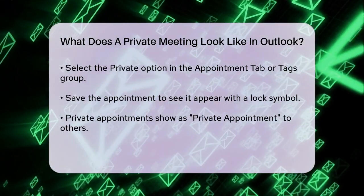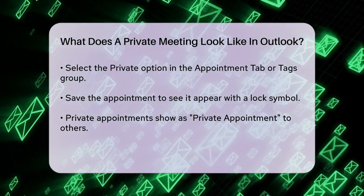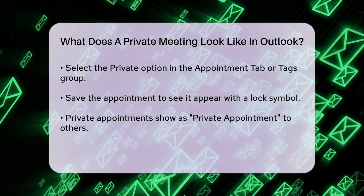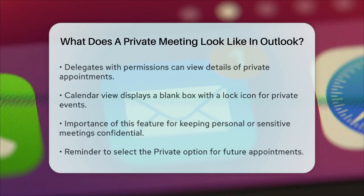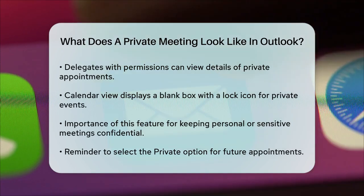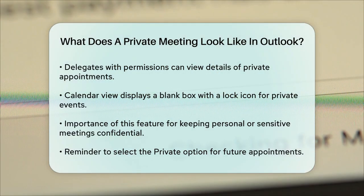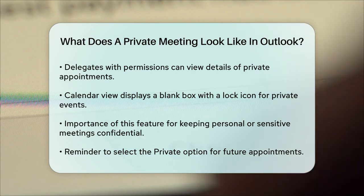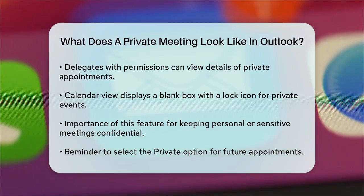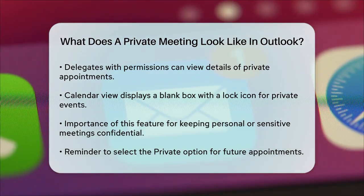In the calendar view, you'll see a blank box with a lock icon indicating that the event is private. This way, others can see that you're busy during that time but won't be able to view the specifics of the appointment.